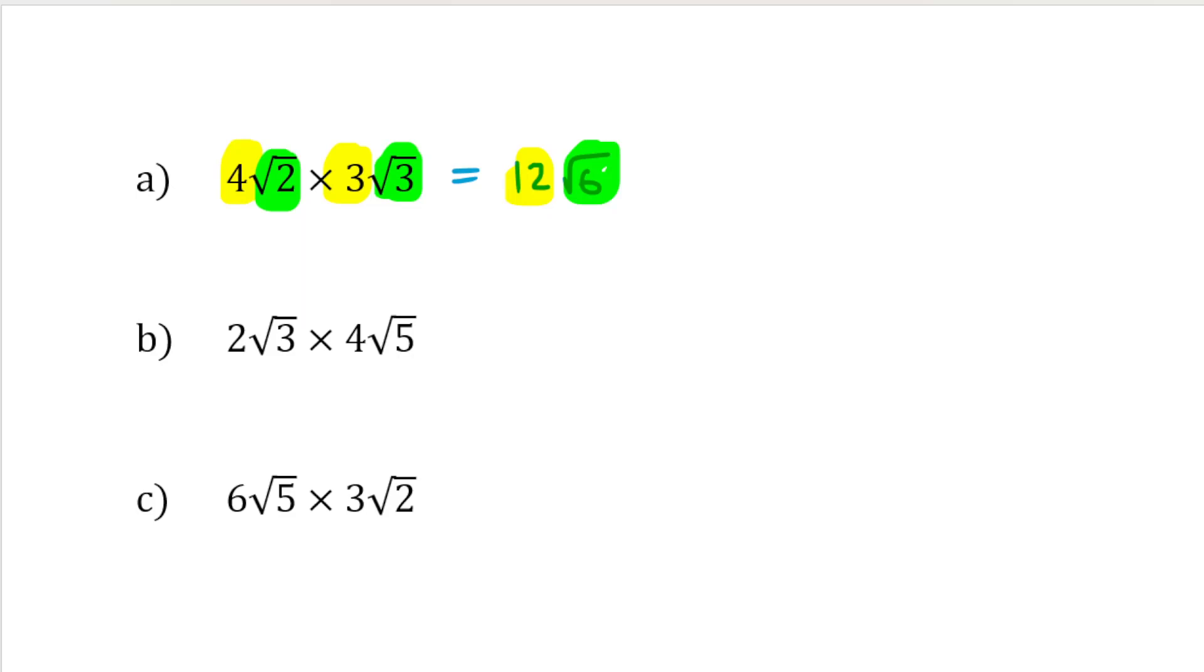Let's do the next one. We've got 2 root 3 times by 4 root 5. So 2 times by 4 is 8, and root 3 times root 5 is root 15. So this is 8 root 15.